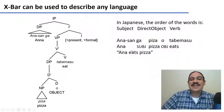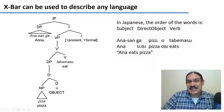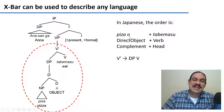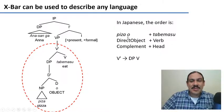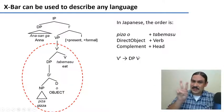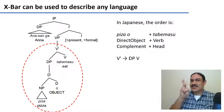Notice that in the sentence 'Ana-san ga pizza wo tabemasu,' the pizza comes before the verb. You have subject, object, verb—SOV for short. Pizza wo tabemasu: direct object, verb. Or more generally, complement, head. So in Japanese, the rule for this bar level would be that the V-bar generates the determiner phrase and the verb: pizza, eat. Whereas in English, you would have the head first: eat pizza.